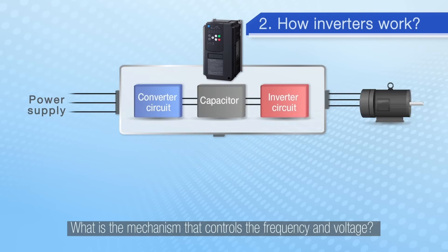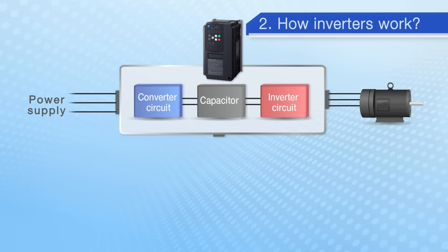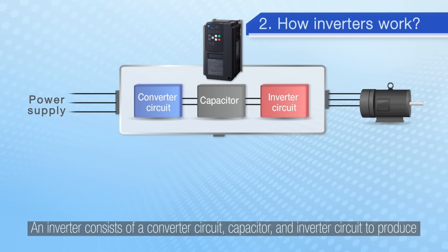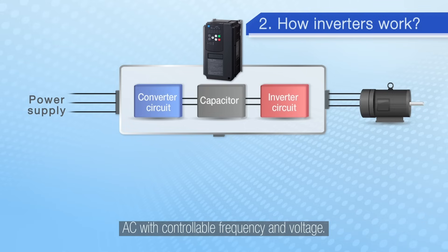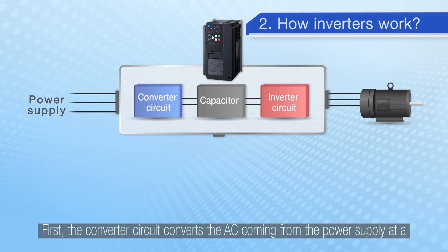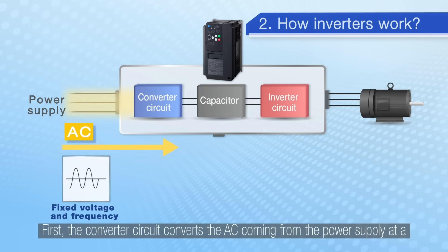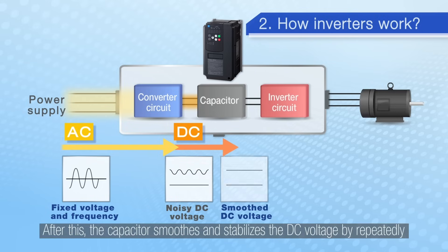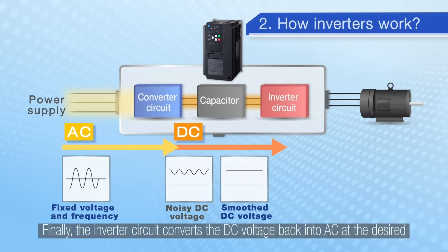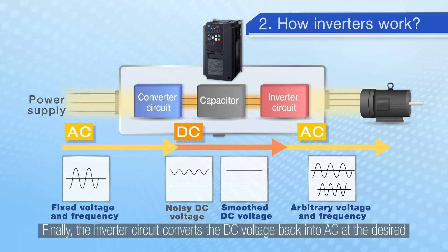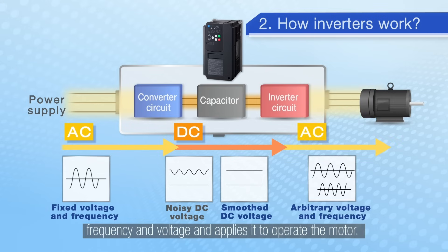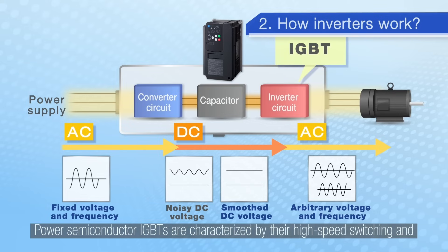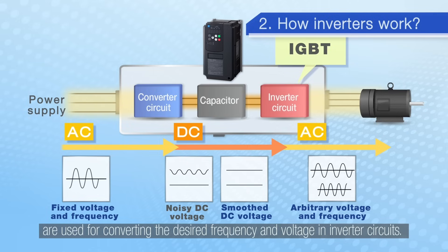What is the mechanism that controls the frequency and voltage? Please take a look at this diagram. An inverter consists of a converter circuit, capacitor and inverter circuit to produce AC with controllable frequency and voltage. First, the converter circuit converts the AC coming from the power supply at a certain voltage and frequency into DC. After this, the capacitor smooths and stabilises the DC voltage by repeatedly charging and discharging. Finally, the inverter circuit converts the DC voltage back into AC at the desired frequency and voltage and applies it to operate the motor. Power semiconductors IGBTs are characterised by their high speed switching and are used for converting the desired frequency and voltage in inverter circuits.